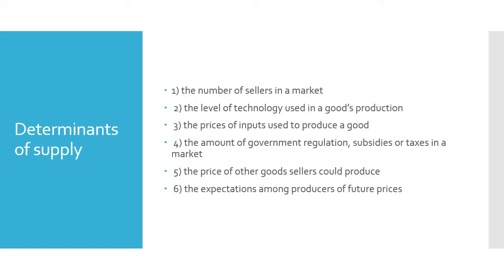The fourth determinant is the amount of government regulation, subsidies, or taxes in the market. Fifth is the price of other goods that sellers could produce. Sixth is the expectation among producers of future prices — when a producer expects an increase in price, they may produce more of that commodity.